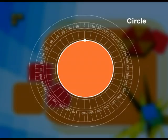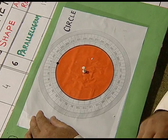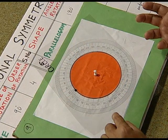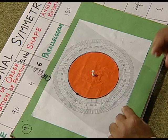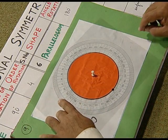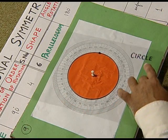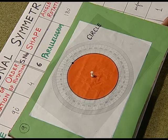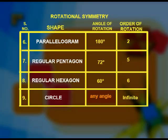Next, we take the example of the most perfect figure — a circle. On rotating the circle, whatever small rotation you make, the circle coincides with itself throughout. Therefore, the angle of rotation of a circle can be any angle and the order of rotation is infinite.